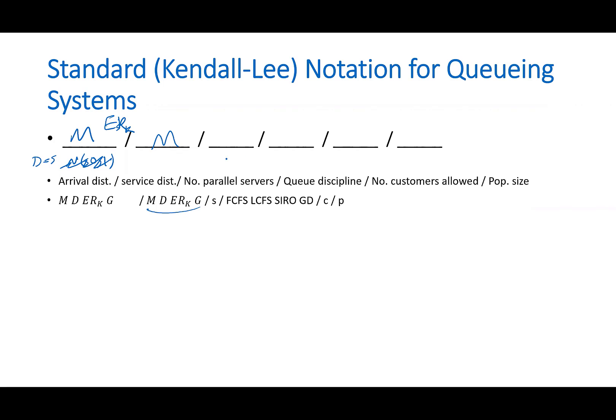Next character is the number of parallel servers, number of servers. If you put five or three or two, it means how many servers or how many lines are there in that queueing system. For example, you're describing a hospital or a bank.